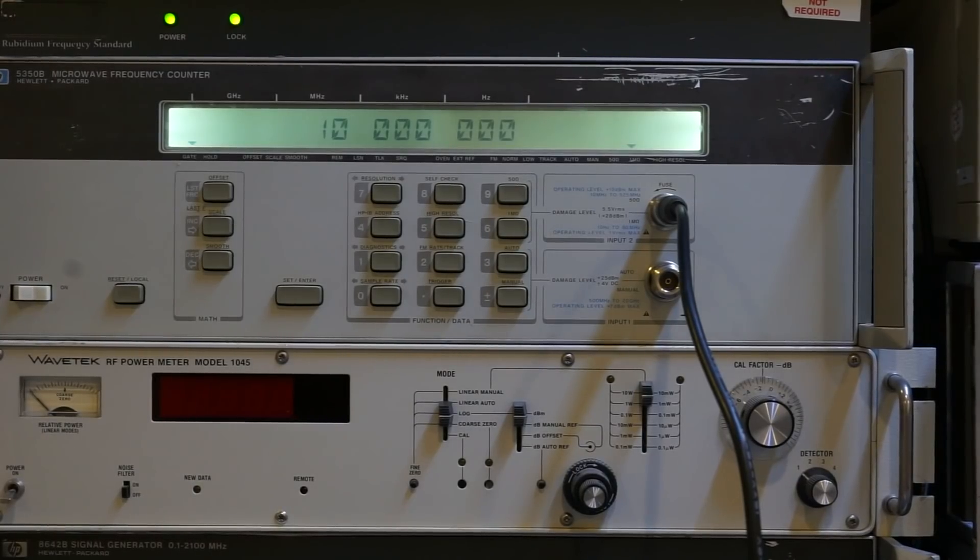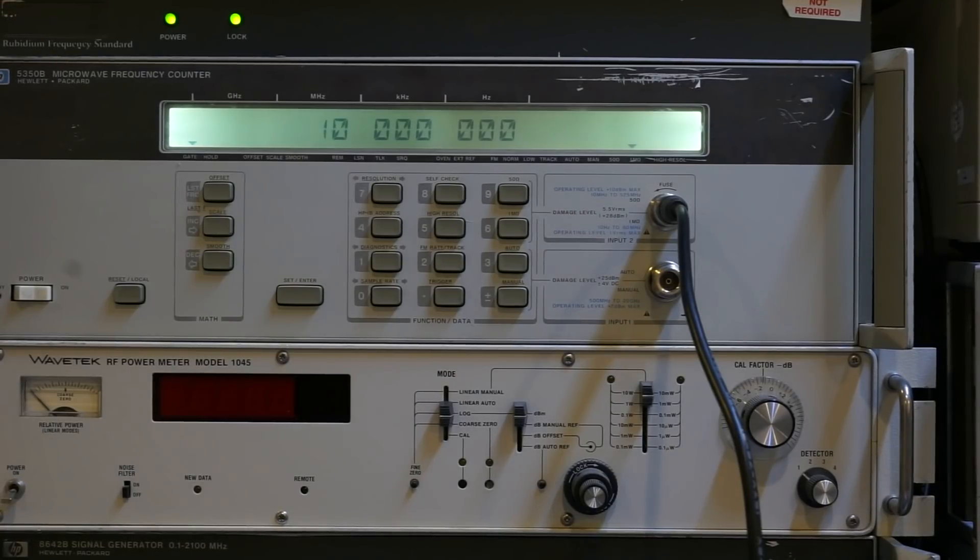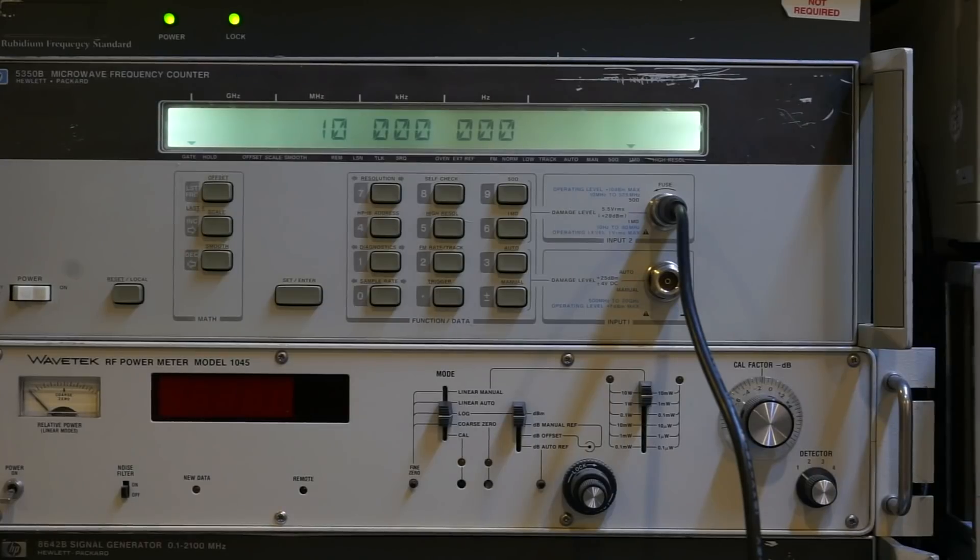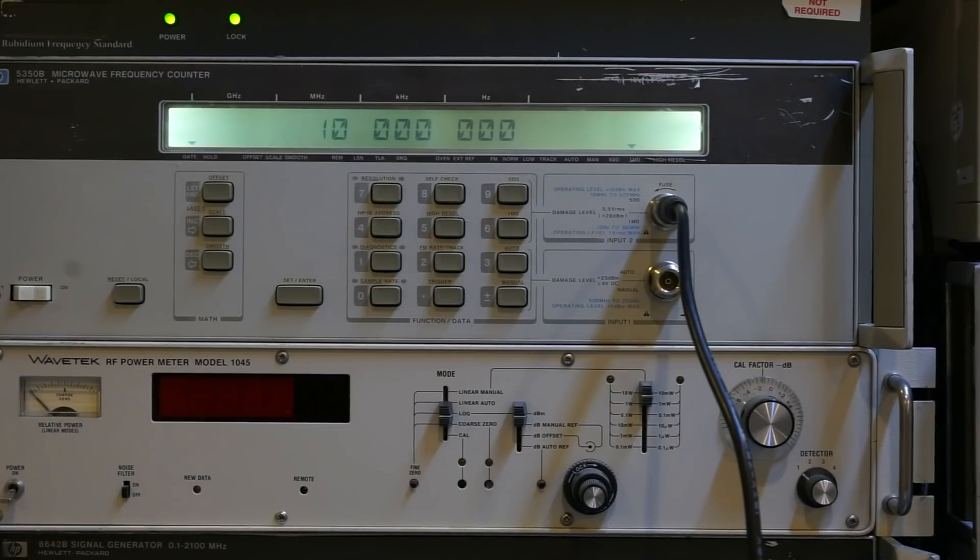And by the way, most of the equipment here in the lab that are using the ovenized crystal oscillator are actually left on all the time, because the oven needs time to reach their operating temperature and stabilize. In fact, for most of the calibration procedures, you are required to have the oven on for at least 12 to 24 hours prior to calibration. Some of the calibration manual I have seen even require you to leave them on for days before you can do the calibration.